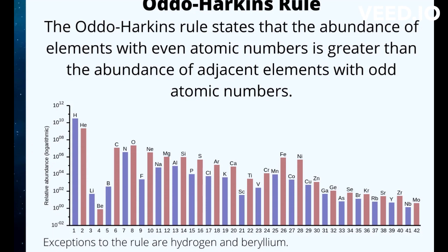Beryllium is even rarer than lithium, atomic number 3, and boron, atomic number 5, even though the primary source of all three elements is cosmic ray spallation. Scientists believe beryllium does not follow the rule because it only has one stable isotope. Lithium and boron each have two stable isotopes.